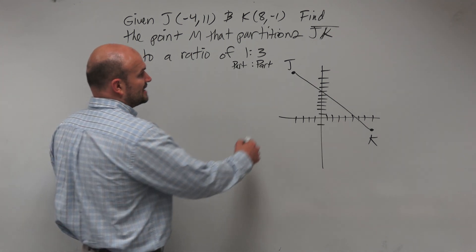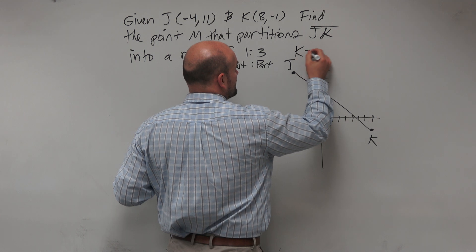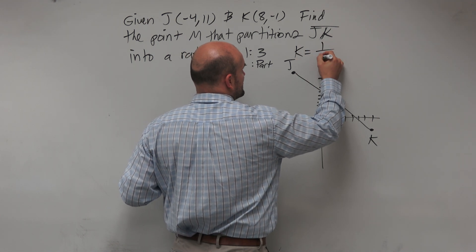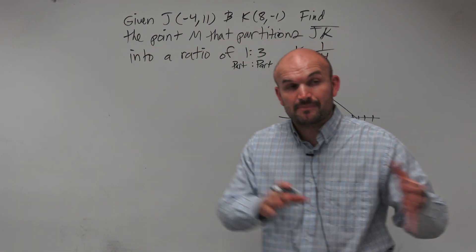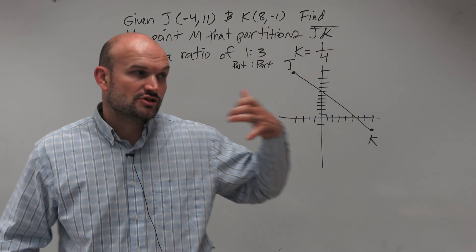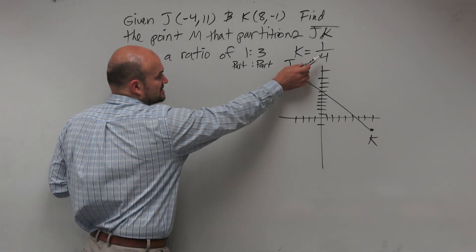However, this is really important for us to understand. My ratio k that we're going to use is always part to whole. So that's going to be 1 over 4. We're going to compare one part to three parts, which means there's a total of four parts. So the ratio that we're going to use is going to be 1 to 4.